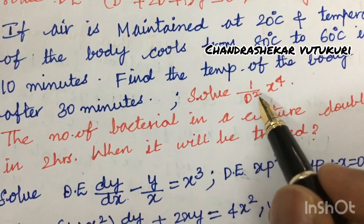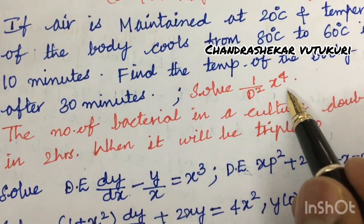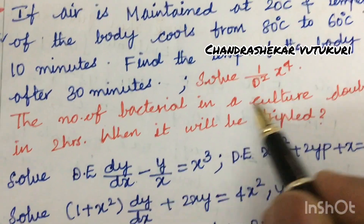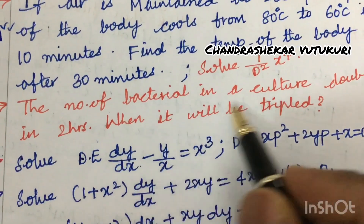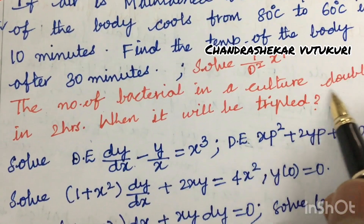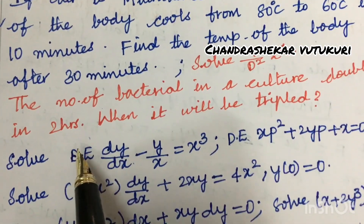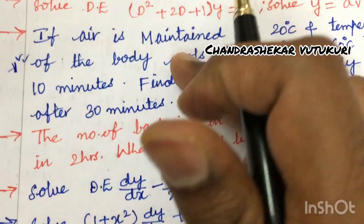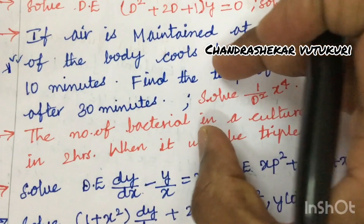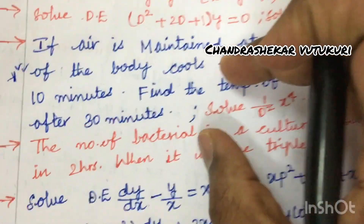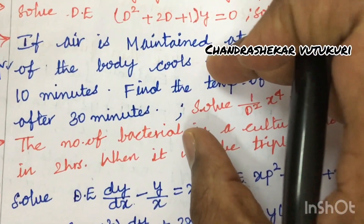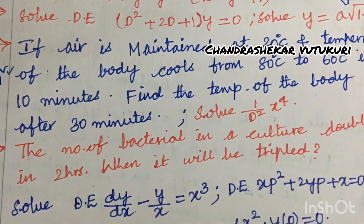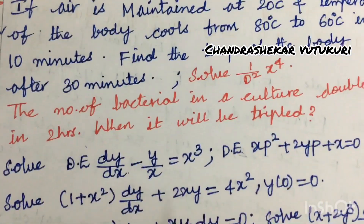Also solve 1/(D²) × x⁴, and the problem: the number of bacteria in a culture doubled in 2 hours — when will it triple? Based on these two questions, you are going to get one question for sure, either 7 or 8 marks.